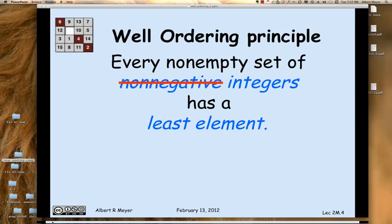Another variant is when, instead of talking about the non-negative integers, I just talk about all the integers. Is there a least integer? Well, no, obviously, because minus 1 is not the least, and minus 2 is not the least, and there isn't any least integer.